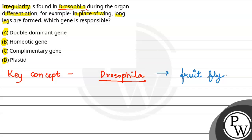irregularity where wings, long legs are formed. What happens? It is due to the malfunction,